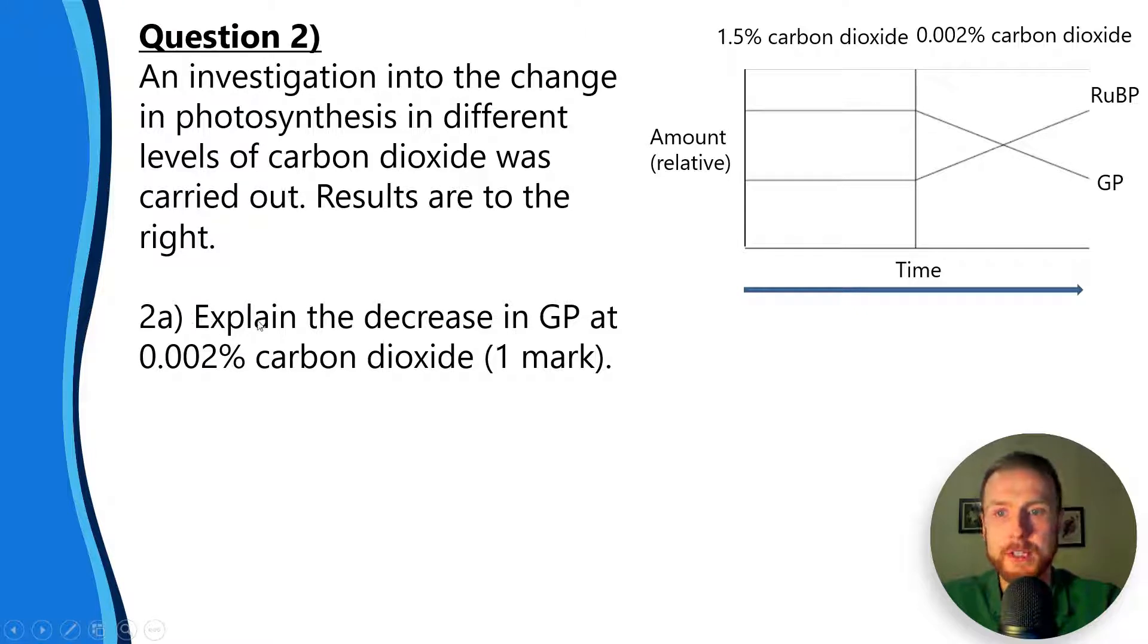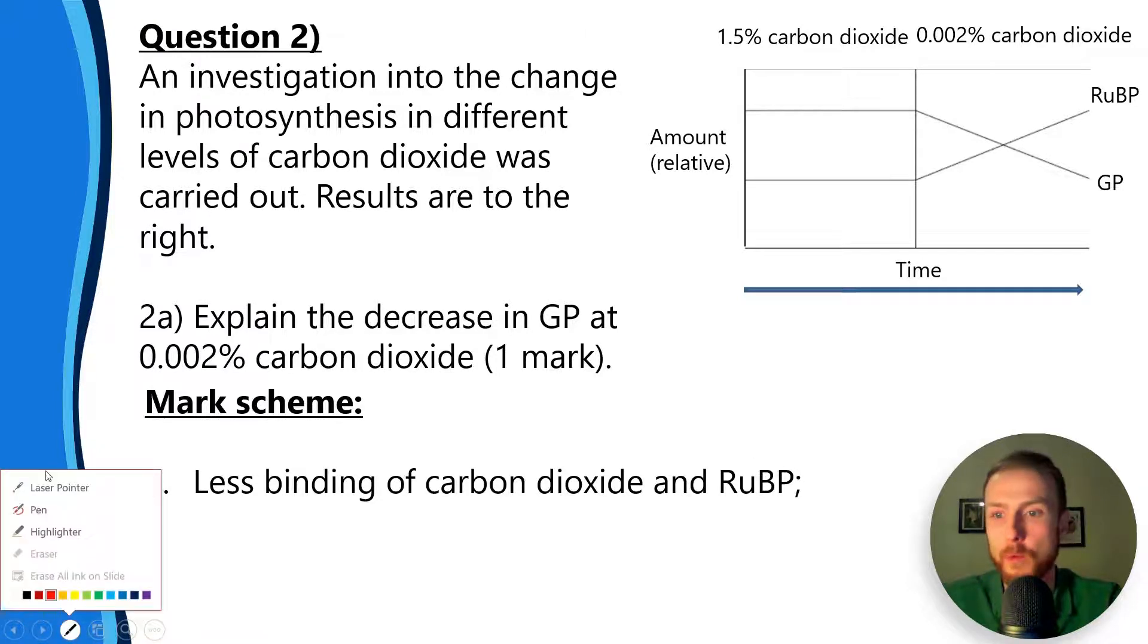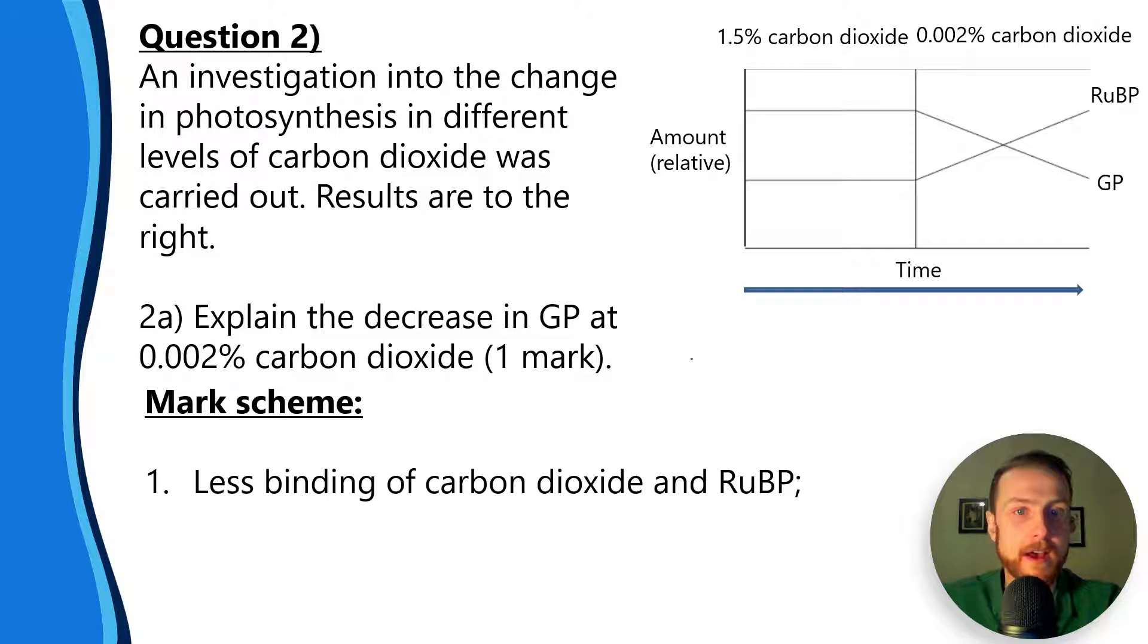The question asks to explain - that's a command word to give reasons - explain the decrease in GP at 0.002% carbon dioxide. The answer is we'll have less binding of carbon dioxide to RuBP.